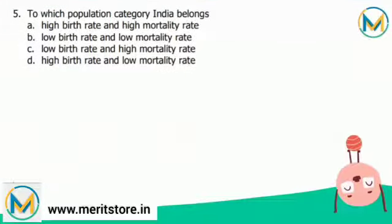Last question: to which population category does India belong? The population in India is characterized by a high birth rate and low death rate. This means the rate of births is comparatively higher than the rate of deaths. As a consequence, the population generally increases. The correct answer is option D — high birth rate and low mortality rate.